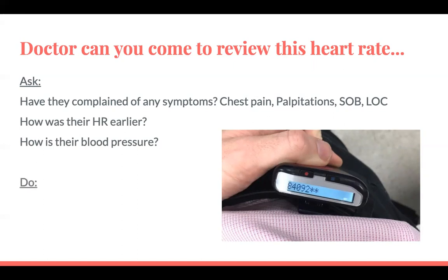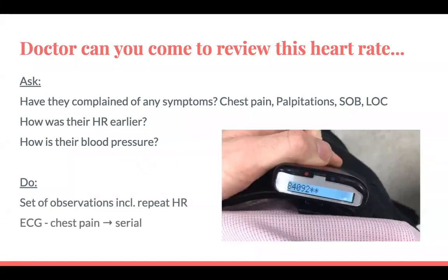What do you want the nurse to do for you? First, you want a set of repeat observations including heart rate, just to see whether it was a one-off. ECGs — particularly if they've got chest pain, you want serial ECGs rather than just one. And lying and standing blood pressure, which is particularly important if they're bradycardic; we'll talk about orthostatic hypotension later.